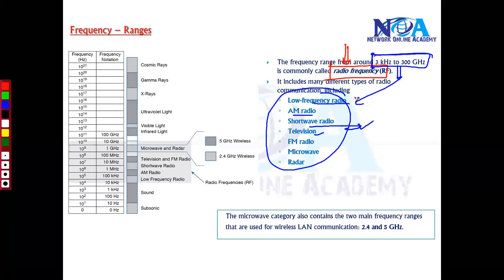This complete range is from 3 kilohertz to 300 gigahertz. When we talk about wireless, specifically wireless LAN, there are two common frequency ranges that are designated and used for wireless products.